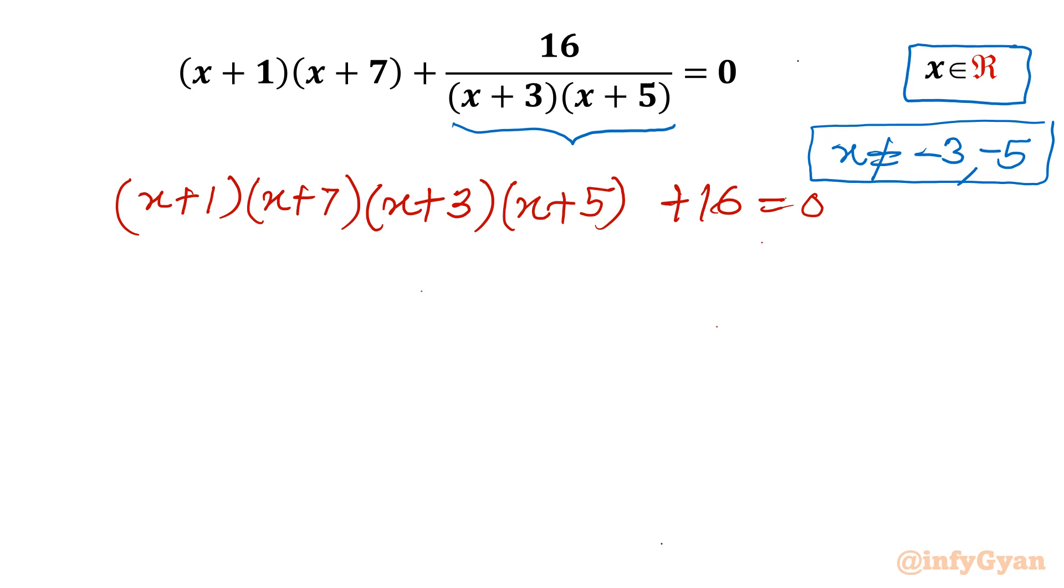Let us multiply these two brackets all together and these two all together. x times x is x square, x times 7 is 7x, 1 times x is 1x, so 8x plus 7. Now x times x is x square, x times 5 is 5x, 3 times x is 3x, so 8x, 3 times 5 is 15 plus 16 equal to 0.